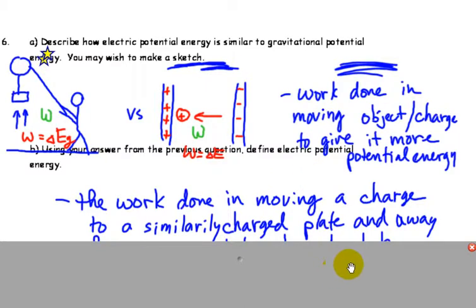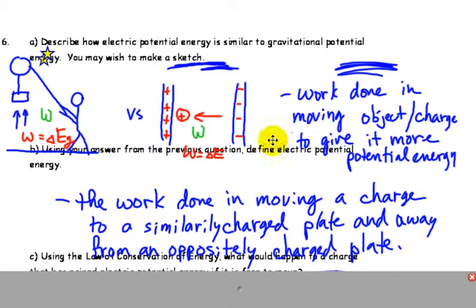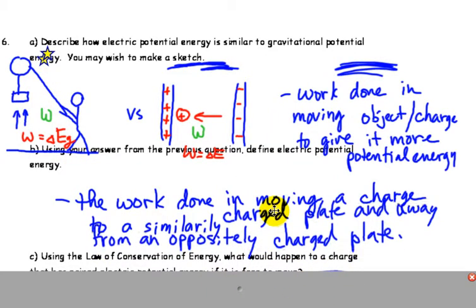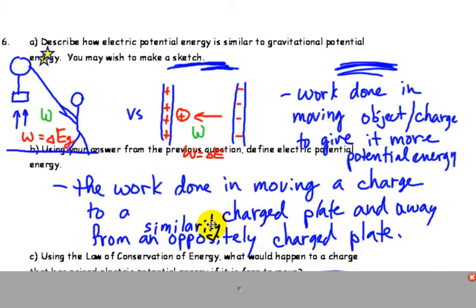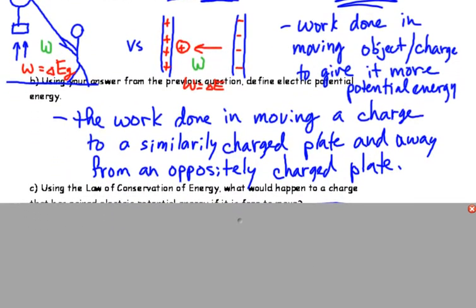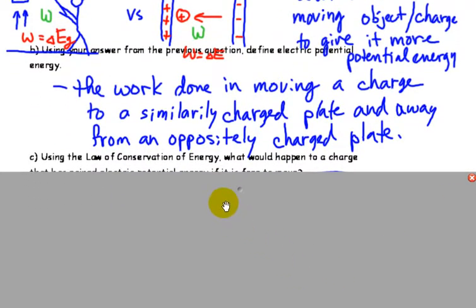Over here, using your answer to find electric potential energy. So, electric potential energy, you can relate it to gravitational potential energy. The work done in moving a charge to a similarly charged plate, and away from an oppositely charged plate. So, forcing it to go in a particular direction.